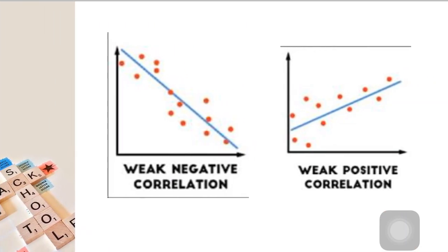What if our relationship is weak negative or weak positive? Or you may ask, how do we know that it's really moderate and not weak? And how do we know that it's weak and not a zero correlation?